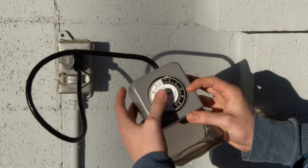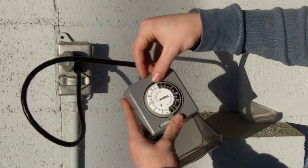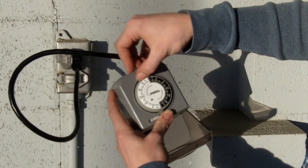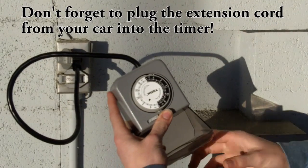Say I leave my house at 7:30 in the morning. I want to push in the tabs from 5:30 all the way up until 7:30, which will power the timer during that time.